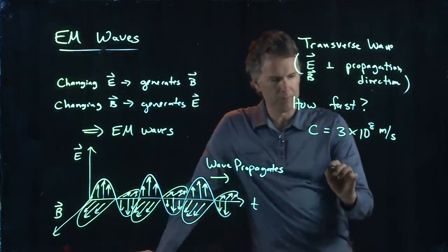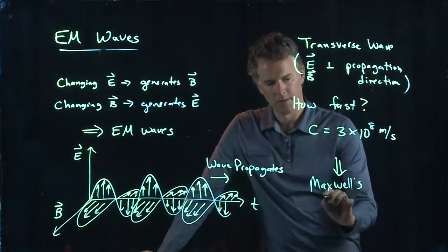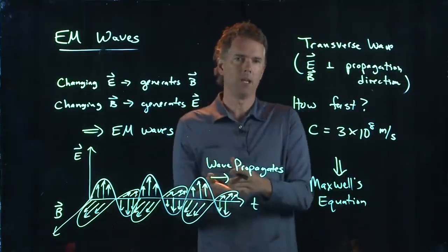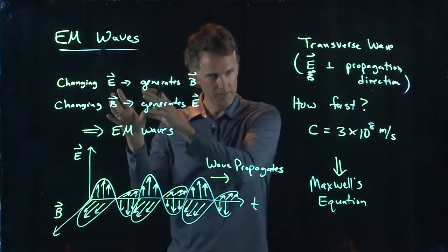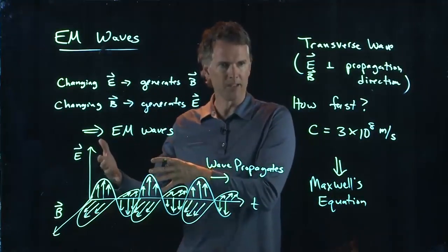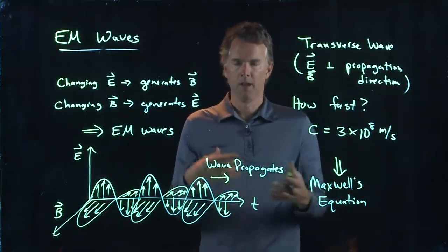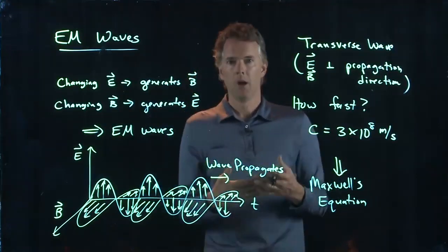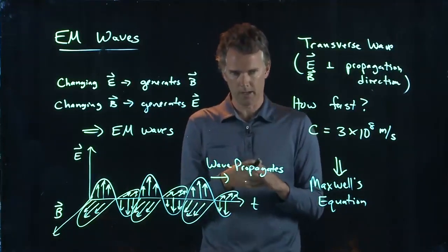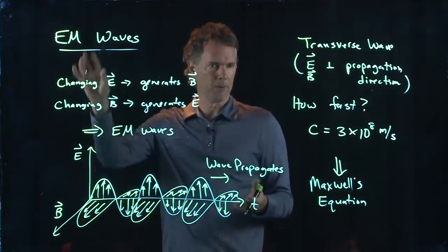Up until Maxwell, we had independent quantities: electricity and magnetism. Electricity was governed by things like Coulomb's law, magnetism by Ampere's law. Faraday's law started to tie those two together. But it wasn't until Maxwell came along and combined all those things into one quantity that we ended up knowing that light itself is made up of electromagnetic waves.